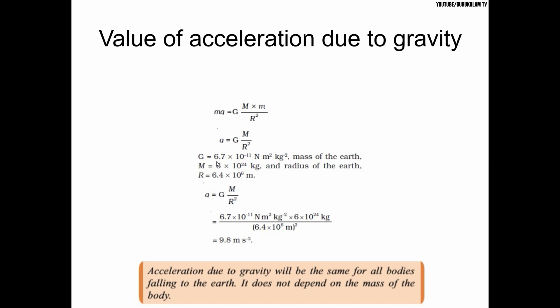Substituting the values: G equals 6.67 × 10⁻¹¹, mass of earth M is 6 × 10²⁴ kg, and radius r is 6.4 × 10⁶ meters. Calculating this gives g equals 9.8 meters per second squared. For any object, the acceleration due to gravity is 9.8 m/s².